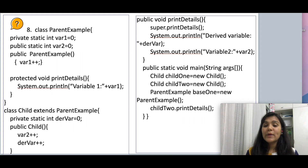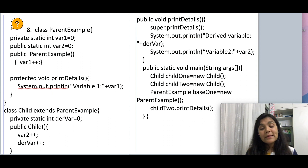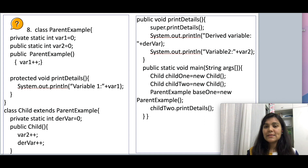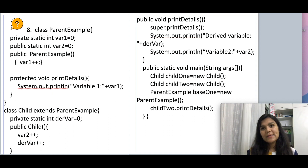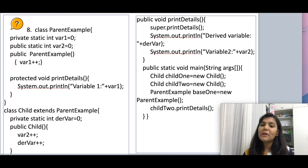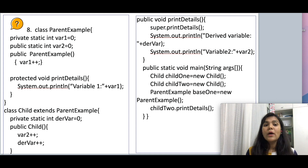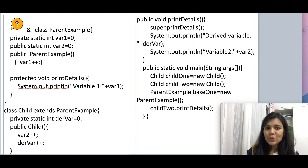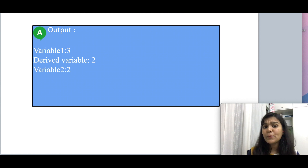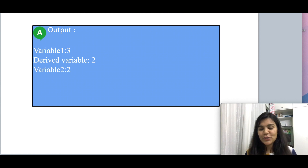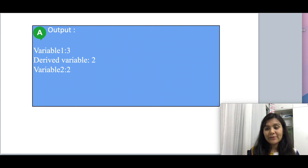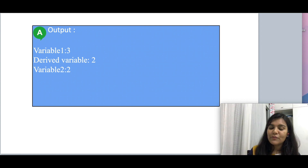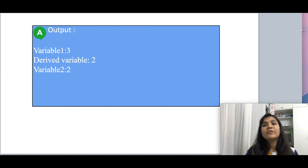When the third instance is created — this time a parent example class object — only the parent example constructor gets called, so variable 1's value becomes 3. The final output is: variable 1 will be 3, the derived variable will be 2, and variable 2 will also have the value 2.